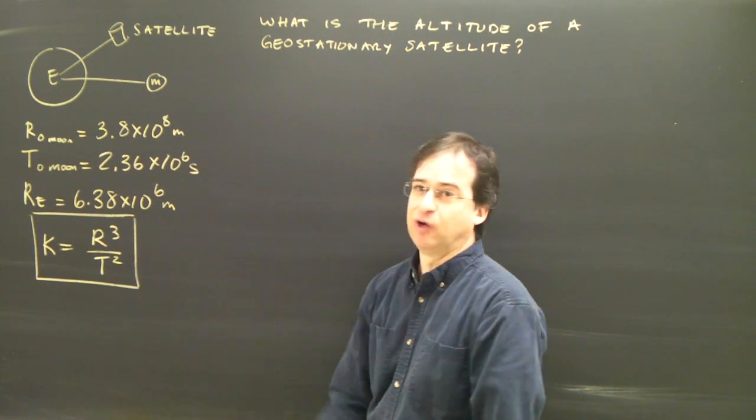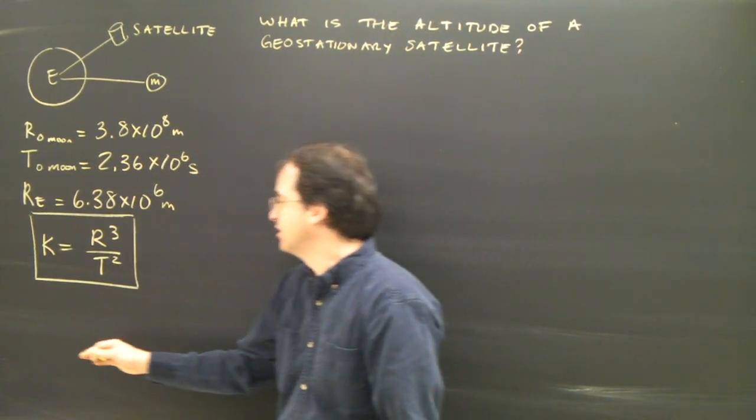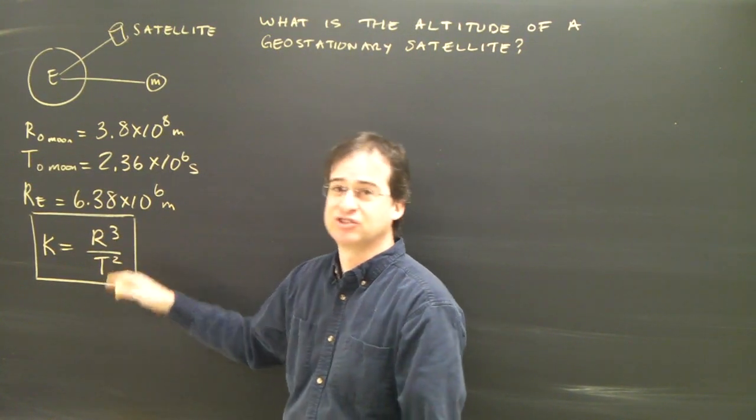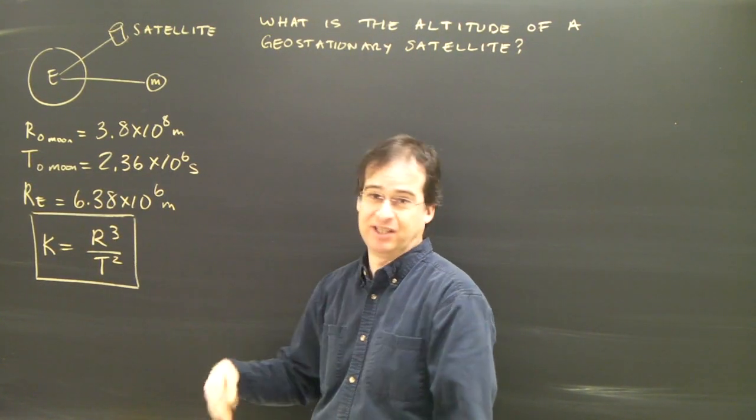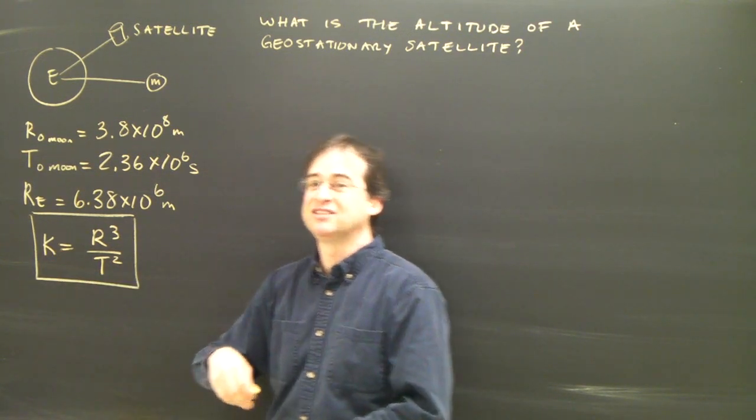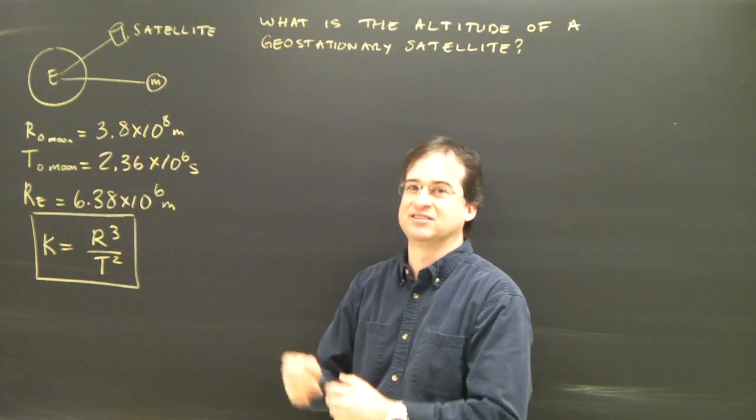Let's try a Kepler's third law problem. Kepler's third law says that the radius of orbit cubed of any object divided by the period squared of that object going around a planet or the sun gives you a constant.